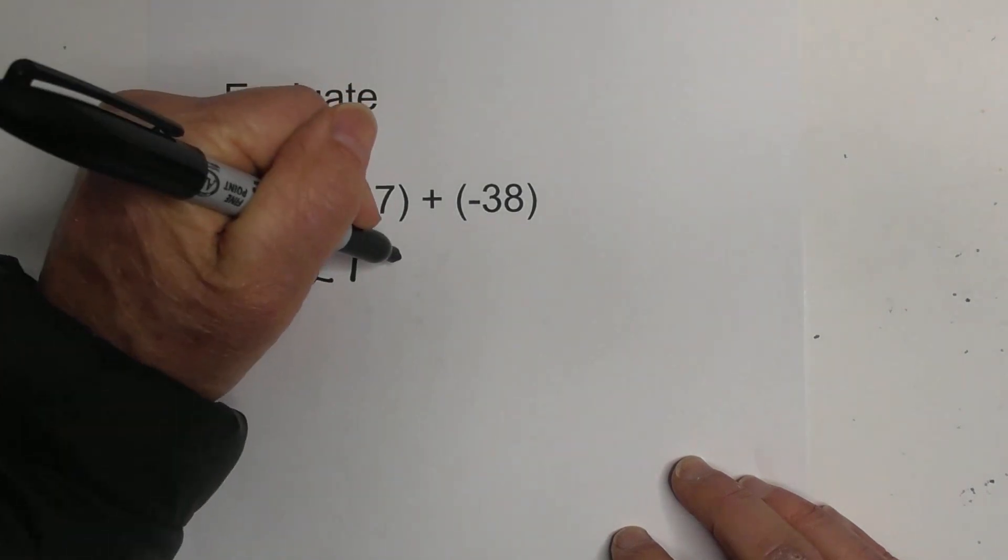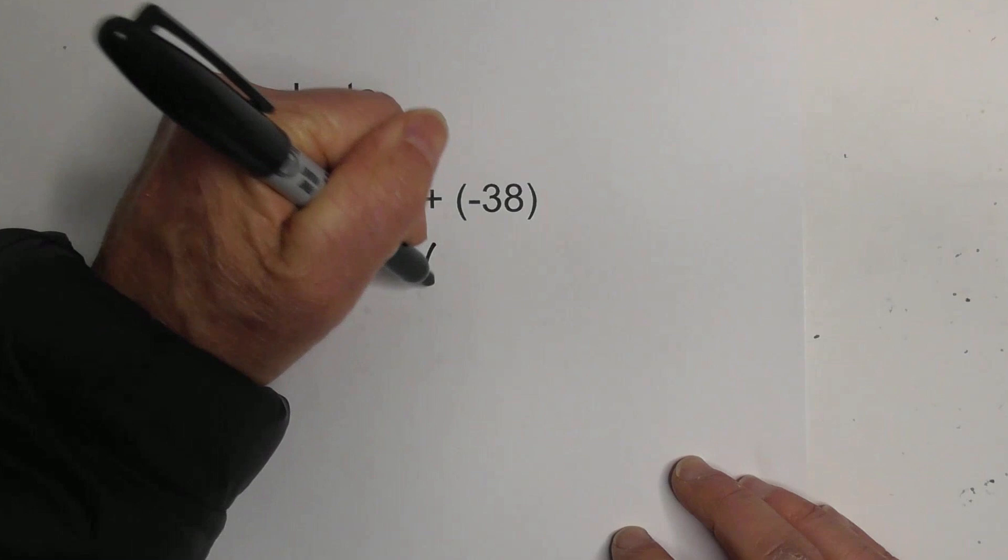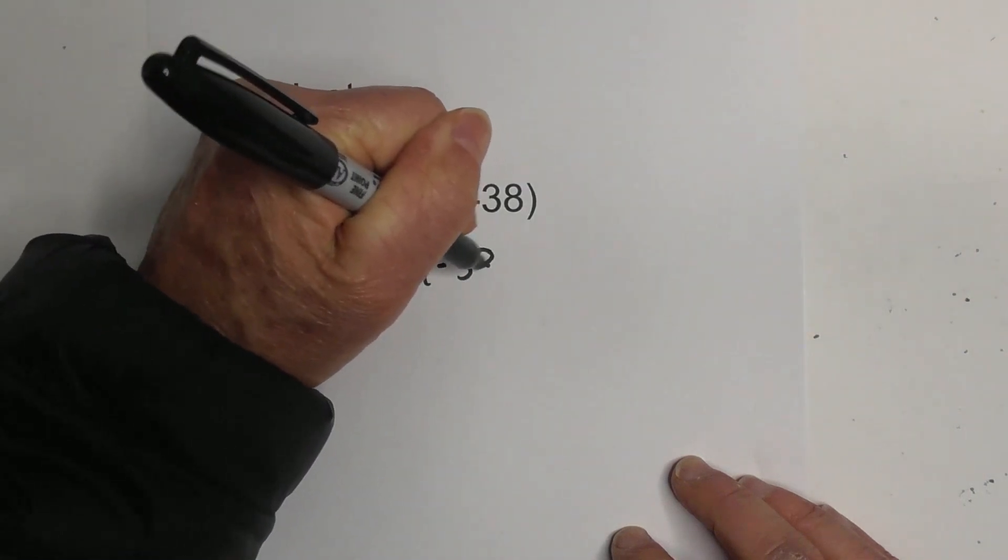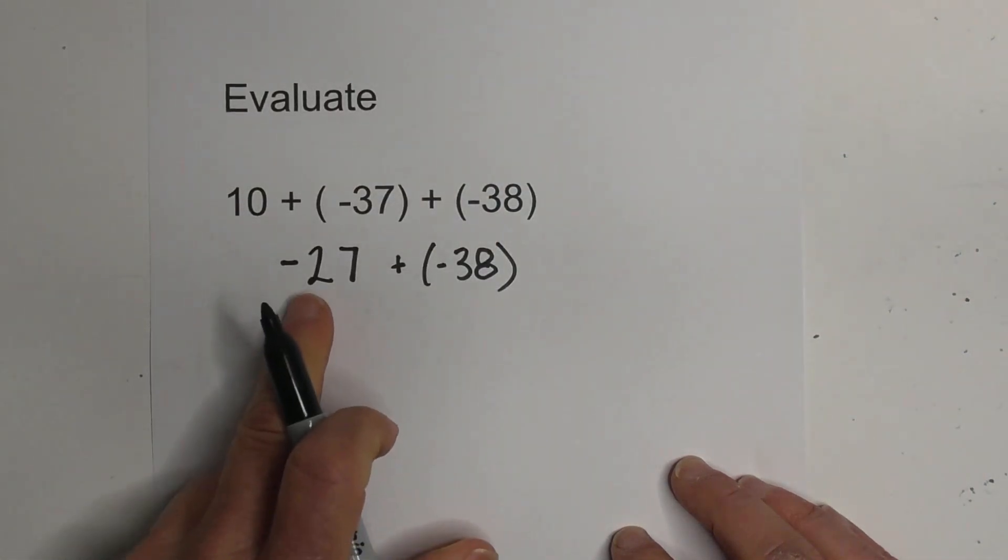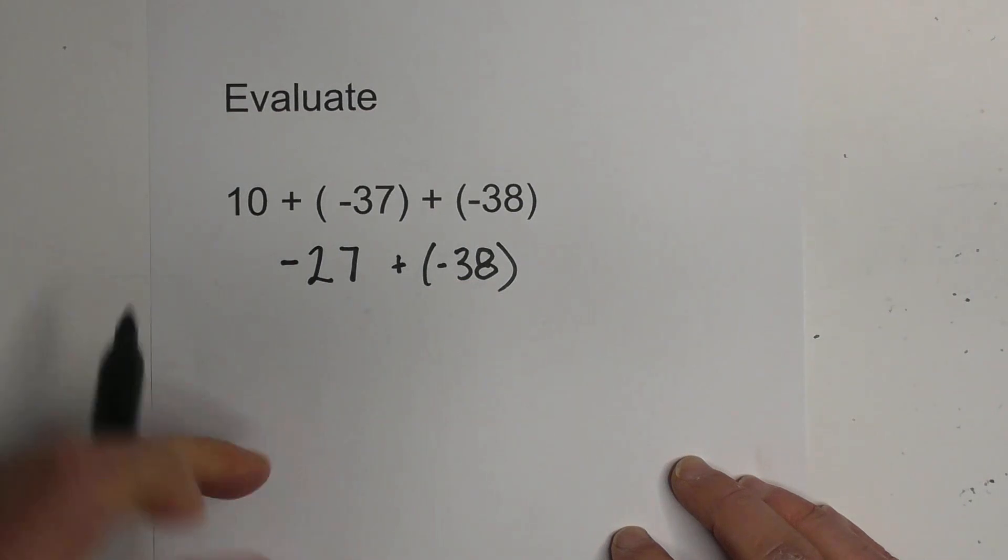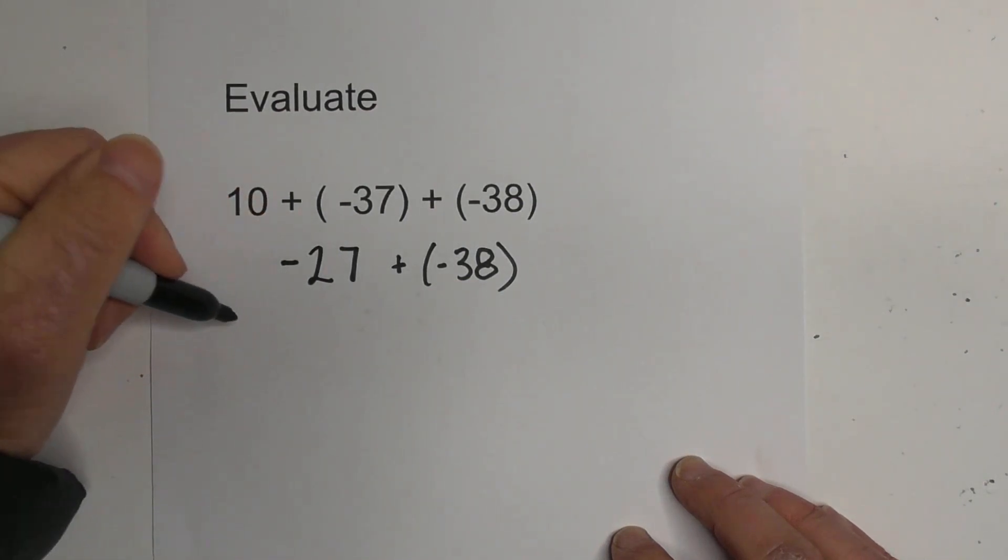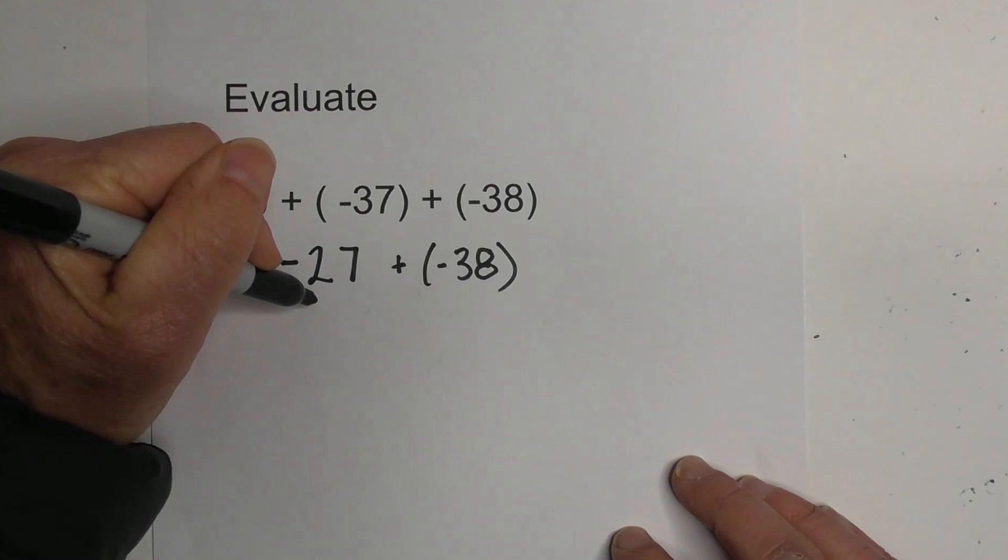Now we're going to add that to a negative 38. And in this one, we're basically going to add. So let's go 27 and 38.